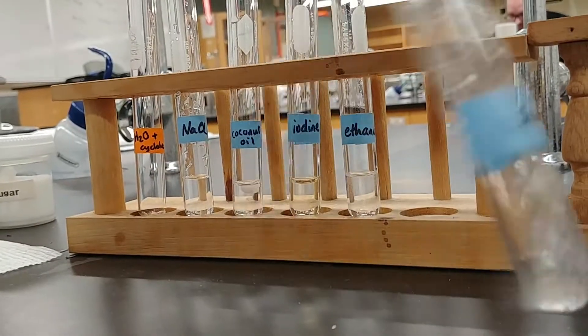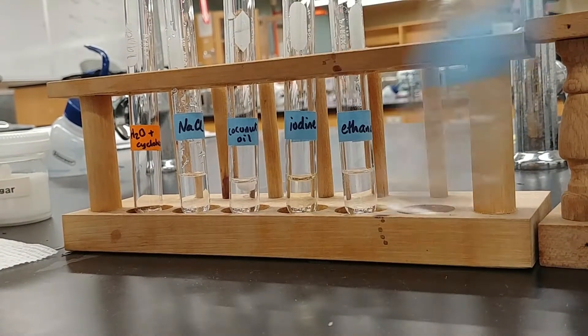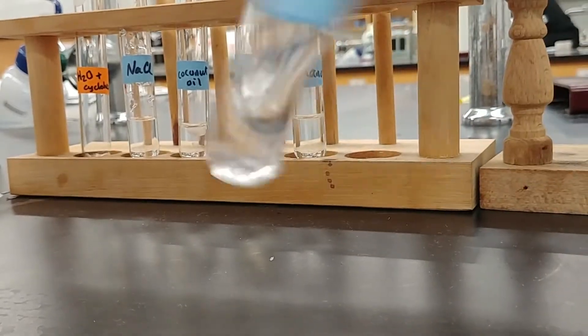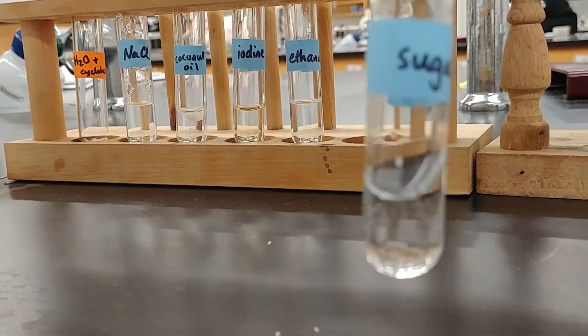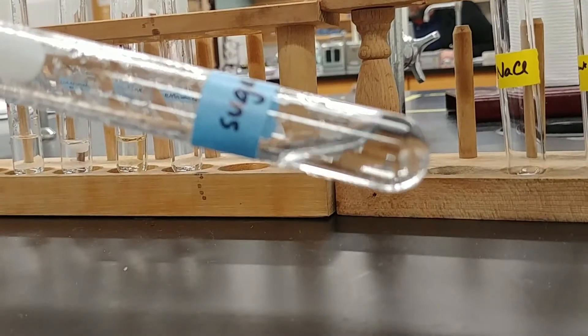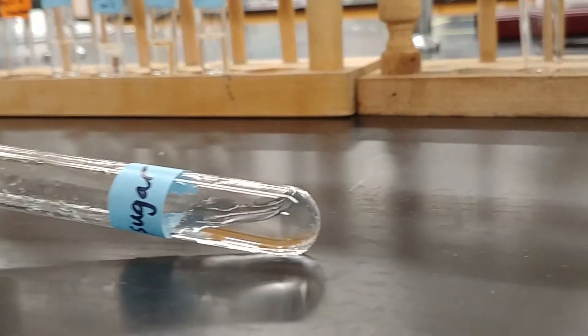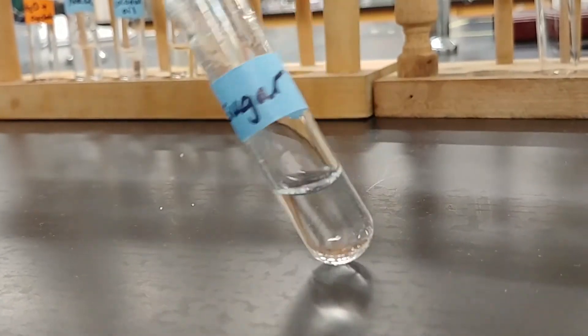And then finally, we have sugar, good old sucrose. Let's mix this vigorously, just like we did the salt. Let's see what we have. And be sure to compare this to what we saw in the beginning. In the beginning, we had small amounts of the solid in each of these test tubes.